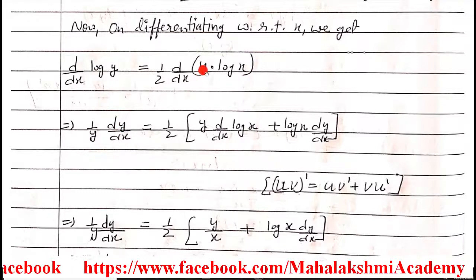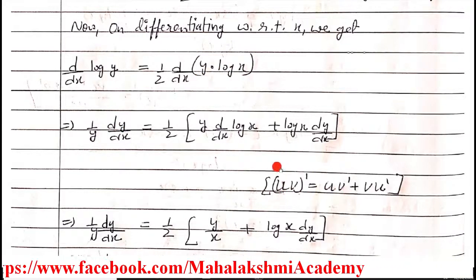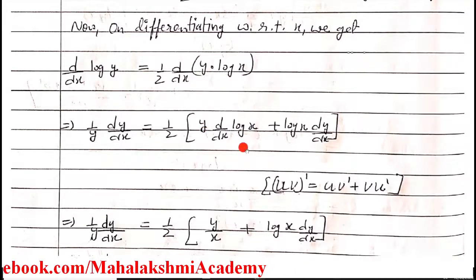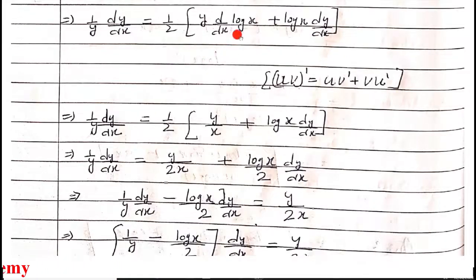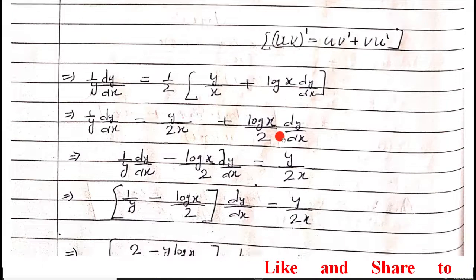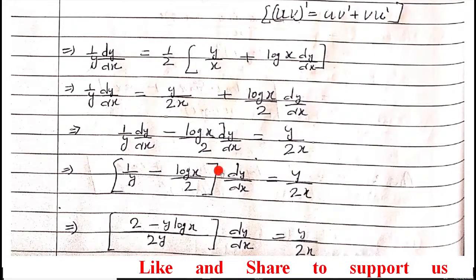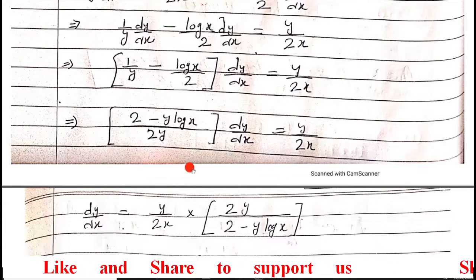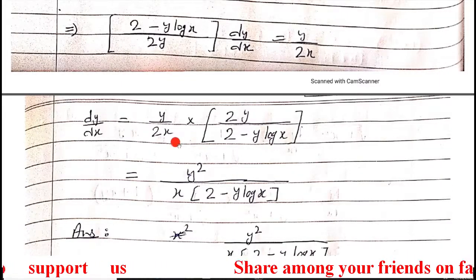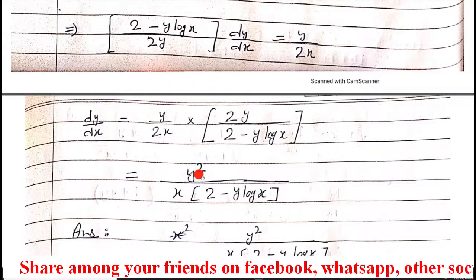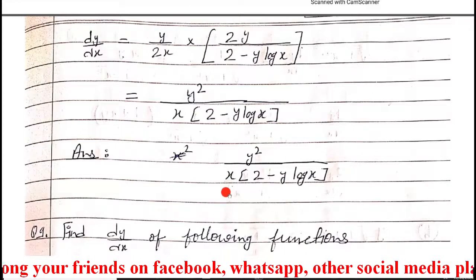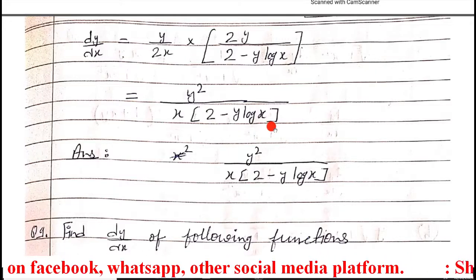Using the product rule on the right side: first y as-is times differentiation of log x, plus log x as-is times differentiation of y. Opening the bracket, half distributes to both terms. Shifting dy/dx to one side and taking it common, then taking the LCM, we get the reciprocal. The 2s cancel and y times y gives y squared. That is our final answer for part b of question 8.